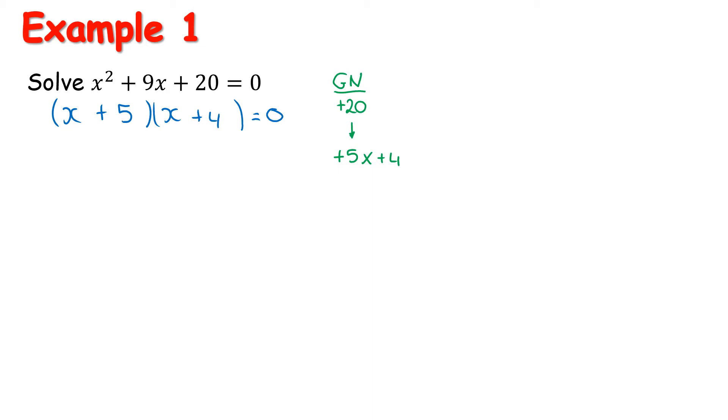We're going to use the zero product property, which tells us that either x + 5 = 0 or x + 4 = 0. And this is the point where we'd start doing the vertical balancing. Now, the balancing part is still very important. However, we want to kind of just make it a little bit quicker or maybe not take up as many lines as we have been doing.